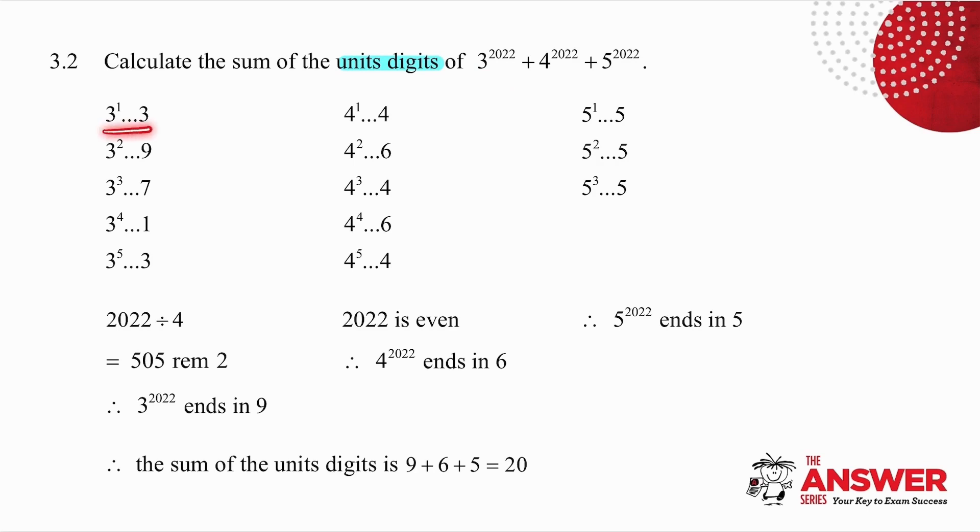3^1 is 3. 3^2 is 9. 3^3 is 27, but they only want the units digits, so 3 cubed ends in 7. 3^4 is 81, which ends in 1. 3^5 ends in 3. You will notice that my units digits cycle through 3, 9, 7, 1.